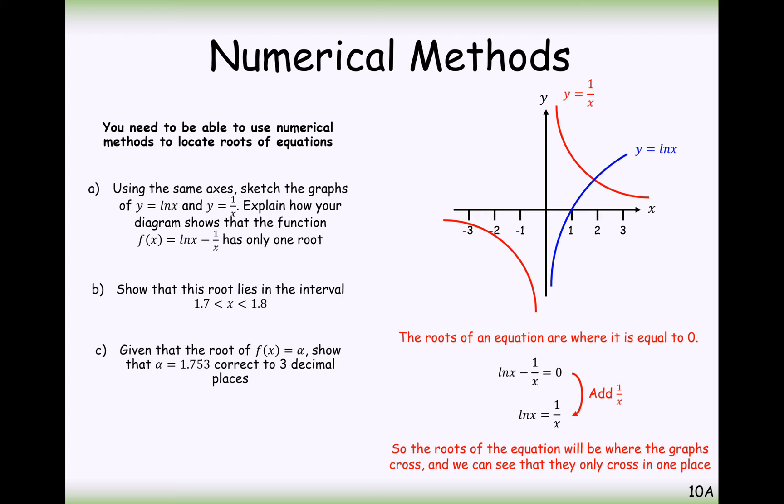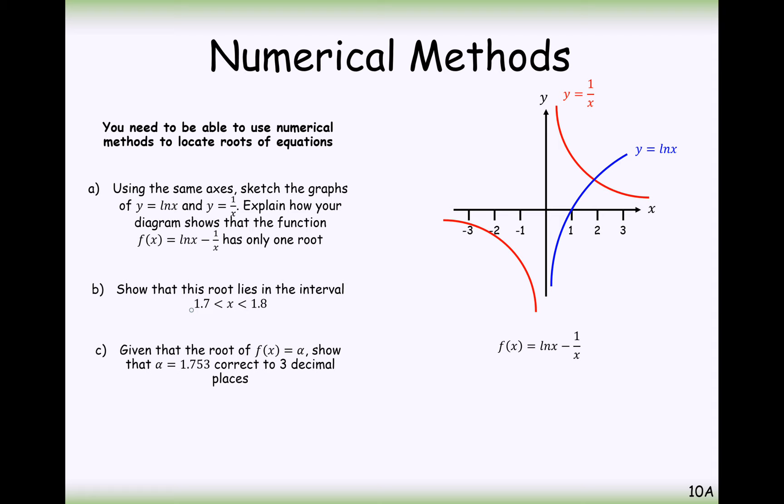Therefore, ln of x minus 1 over x equals 0 will only have one intersection, will only have one solution. The roots of an equation are equal to 0. So the roots of the equation will be where the graphs cross. We can see that they cross in only one place. So the number of times two graphs cross over will be the same amount of roots that one of those graphs subtracts to the other one of those graphs has to equaling 0. Part B is to show that there is a root in between 1.7 to 1.8.